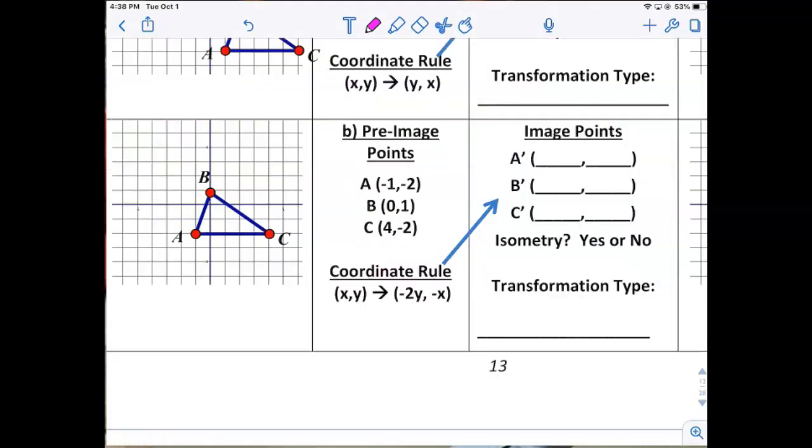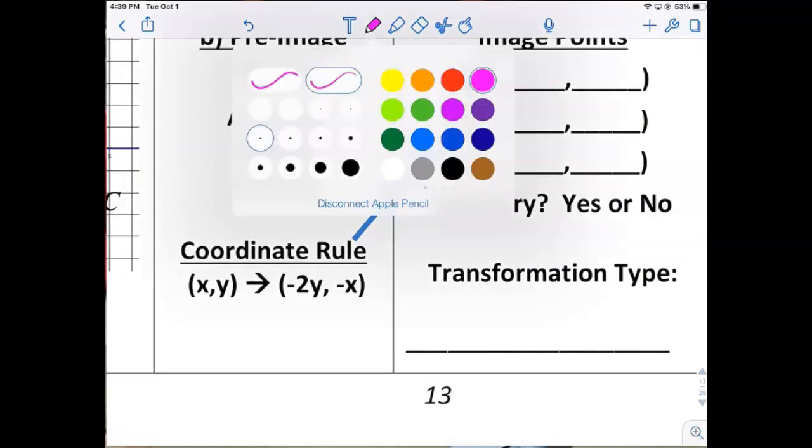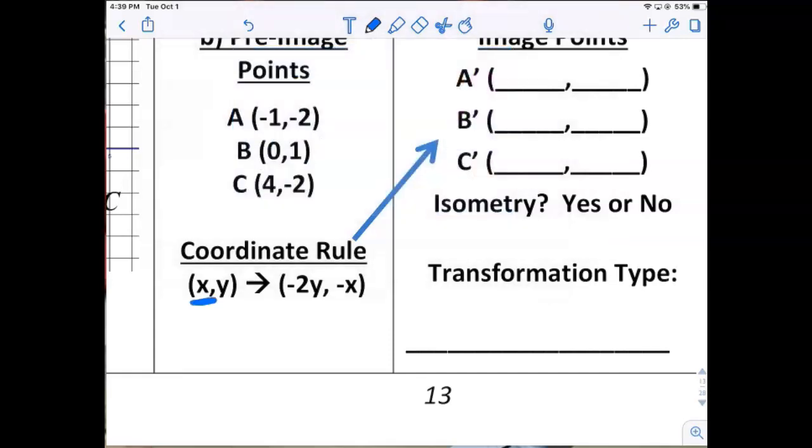How about the bottom one on page 13, this one. The x coordinate moves to the second position and becomes y and changes signs again, so these move to the second position but then they all change signs. Zero obviously doesn't. Now the y moves to the new x, becomes the first coordinate, gets doubled, and changes the sign.